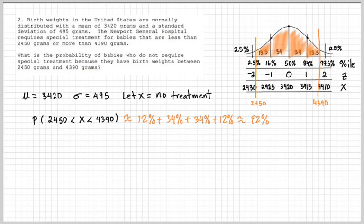How are we doing that? Well, we have these values, again, 13.5, 34, 34, 13.5. These values, I get them through the empirical rule. You've got to watch my previous videos. And the reason why I'm shading from here to here is because the word problem tells me I'm going from 2450 to 4390. And how do I know 2450 and 4390 is here? Because I used the mean and the standard deviation to represent my random variable x.